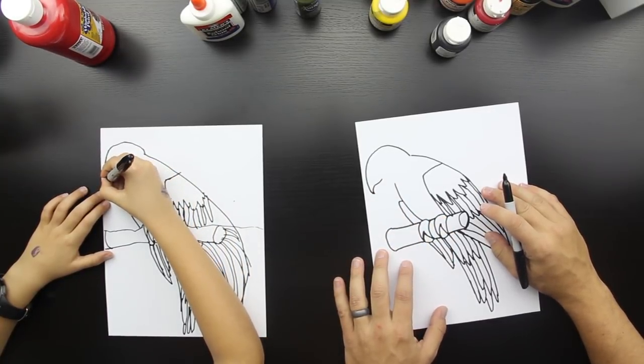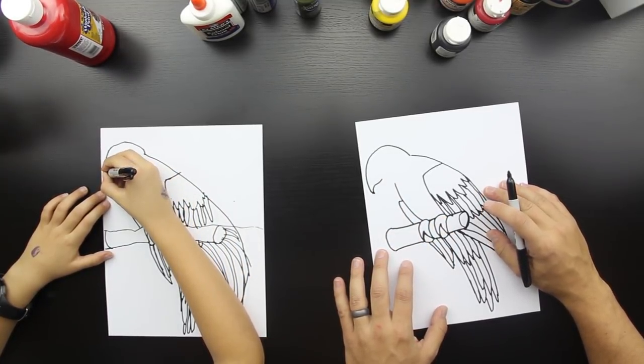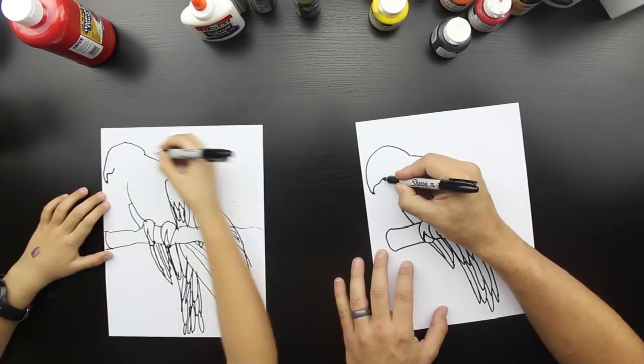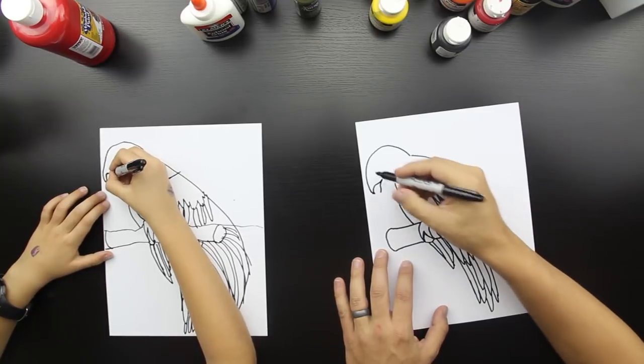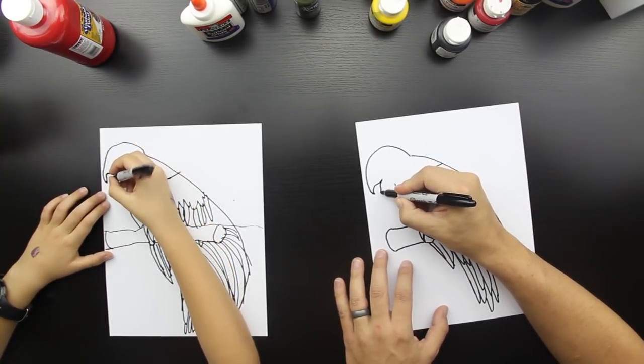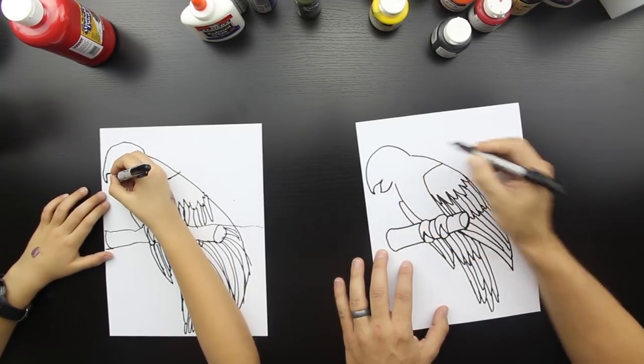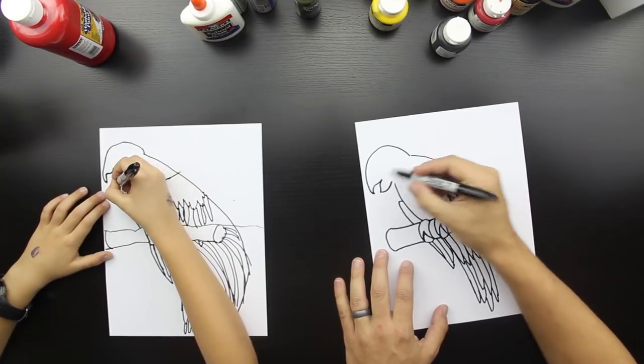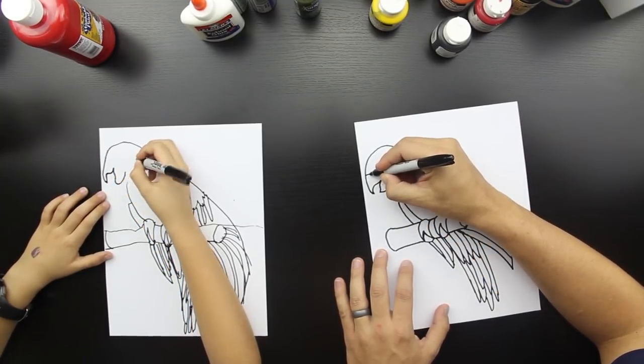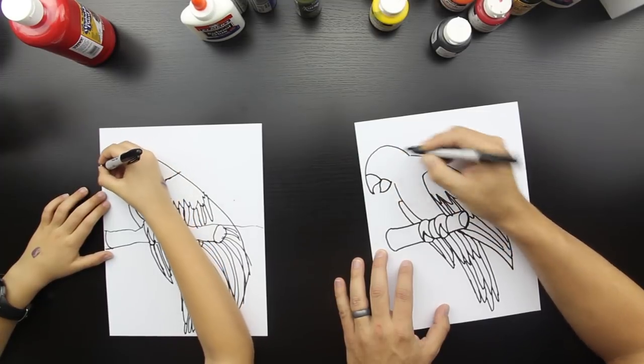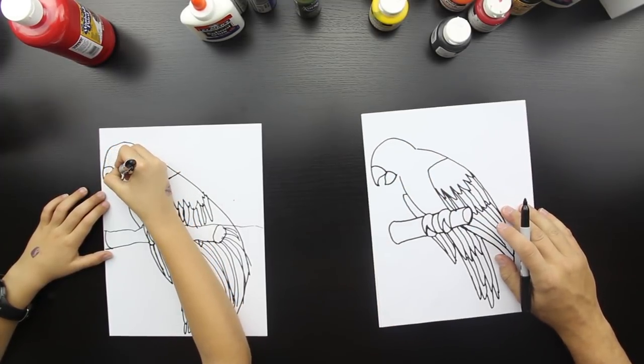That's going to be his first, his top beak. Yup. And then a curved line down. And then a big curved line up. And that's okay if they don't meet yet. And then we're going to close his beak like that. Good.